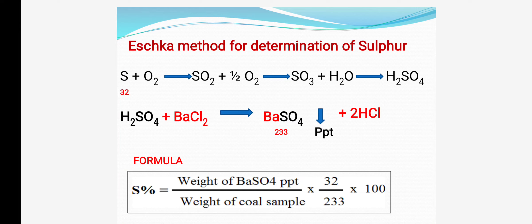When you compare percent sulfur with carbon, hydrogen, and nitrogen, you will find a similarity. Hydrogen: 2 divided by 18. Carbon: 12 divided by 44. Nitrogen: 14 divided by 1000. And now sulfur: 32 divided by 233.